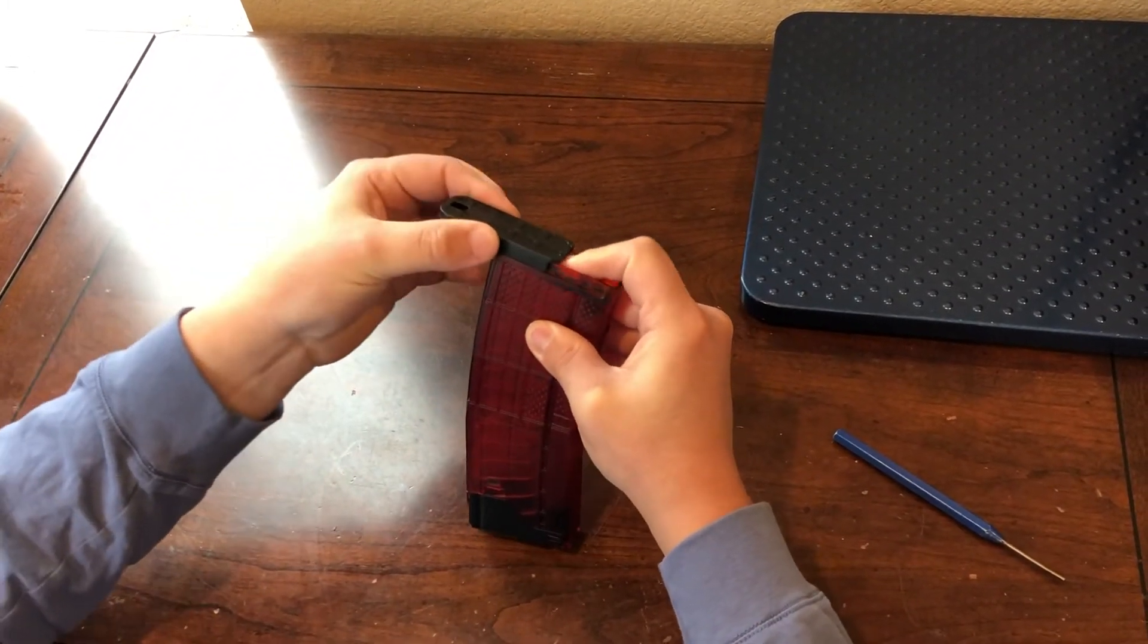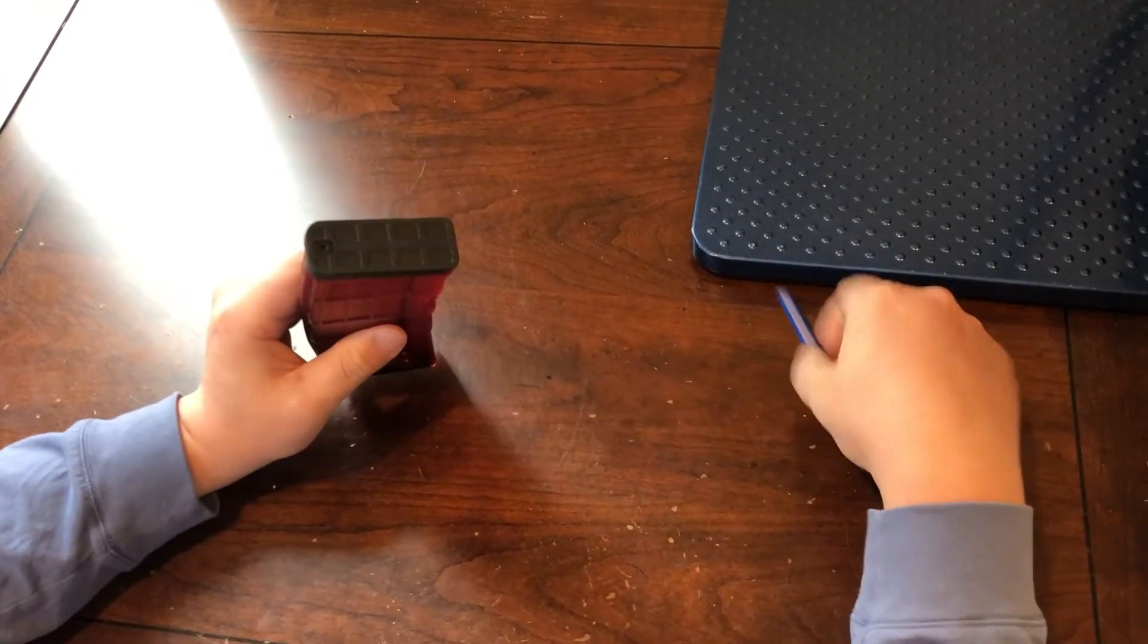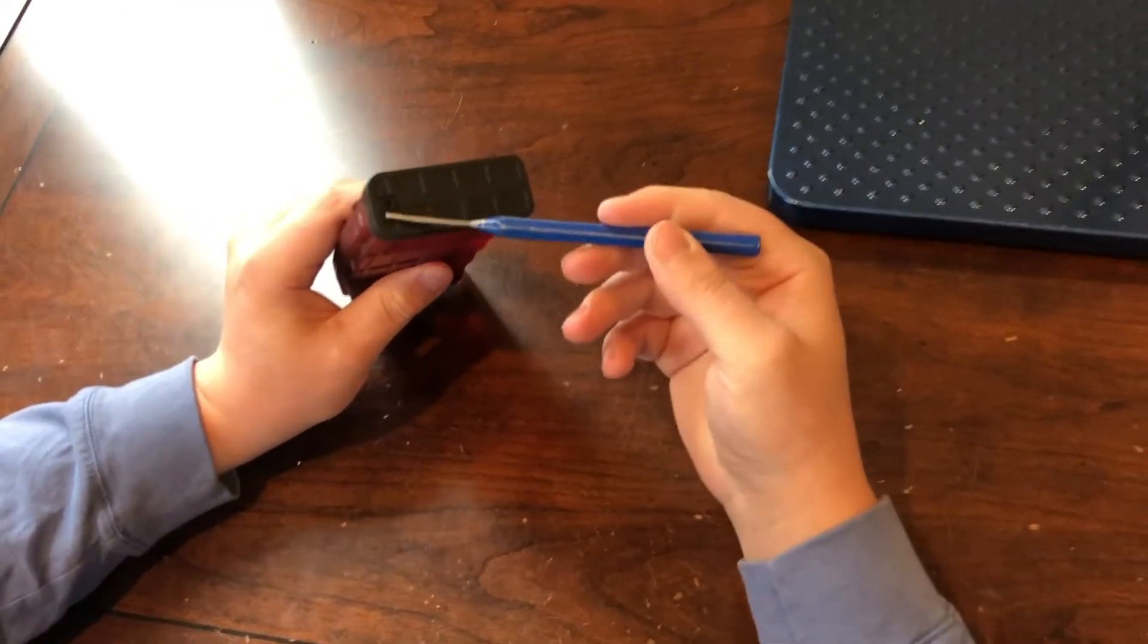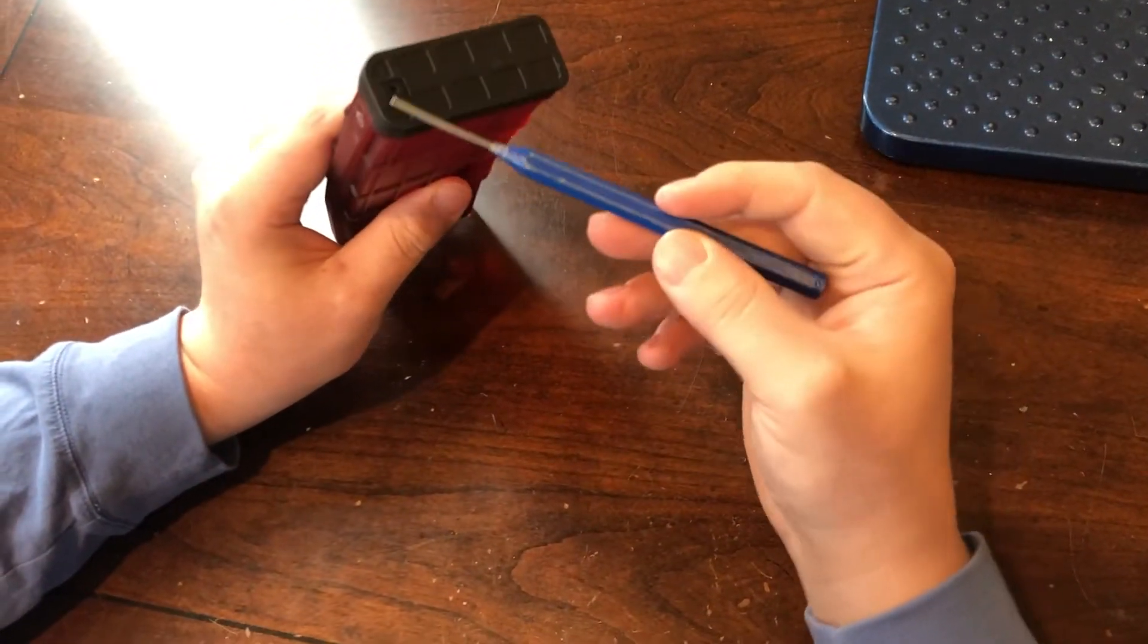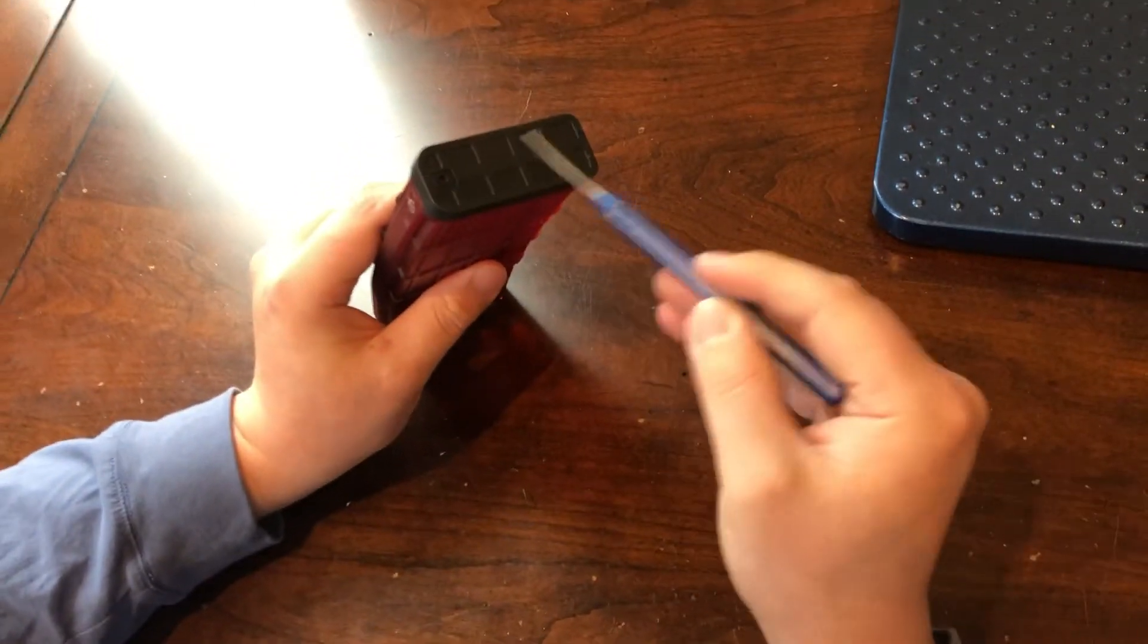So go ahead and slide that on and then you're gonna hear it click and that click is just the plastic piece filling up the floor plate. So the plastics are going to be flush right here.